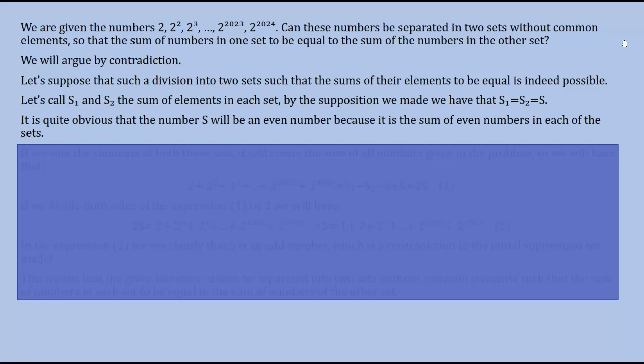As we have often done in this channel, we will argue by the sake of contradiction. To arise a contradiction, let's suppose that such a division into two sets such that the sums of the elements to be equal is indeed possible. We will call the sets S₁ and S₂. And the sum of elements in each set, by the supposition we made, will be equal. So S₁, which is the sum of the numbers in the set 1, is equal to S₂, the sum of the numbers in the set 2, and let's call them equal to S.